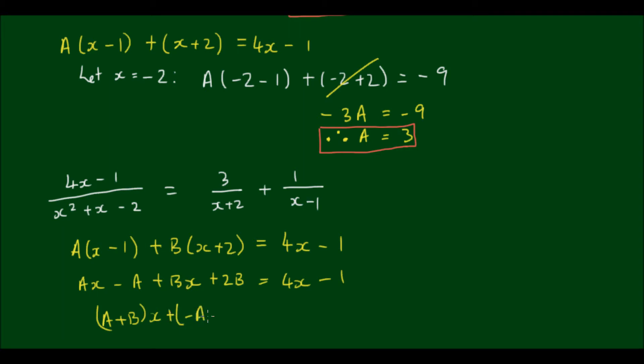And this means that A plus B is equal to 4, and negative A plus 2B is equal to negative 1.